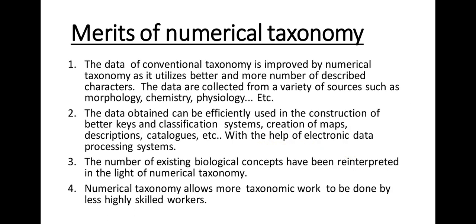Some merits of numerical taxonomy: the data of conventional taxonomy is improved as numerical taxonomy utilizes more and better-described characters. Data is collected from a variety of sources such as morphology, chemistry, and physiology. The data obtained can be efficiently used in the construction of better keys and classification systems, creation of maps, descriptions, and catalogues with the help of electronic data processing systems. Many existing biological concepts have been reinterpreted in the light of numerical taxonomy. Numerical taxonomy allows more taxonomic work to be done by less highly skilled workers.